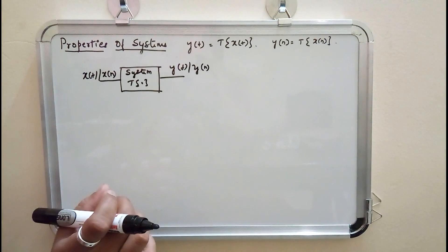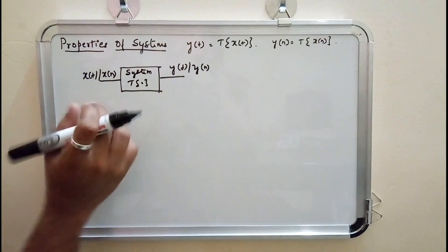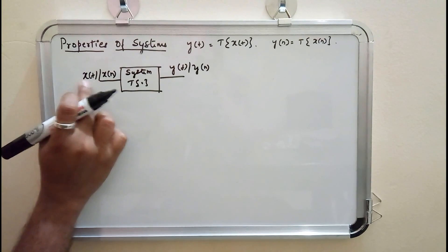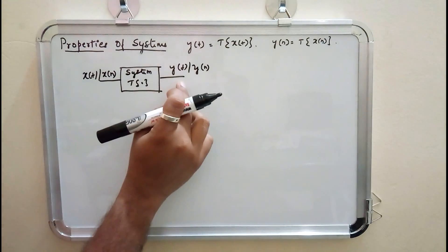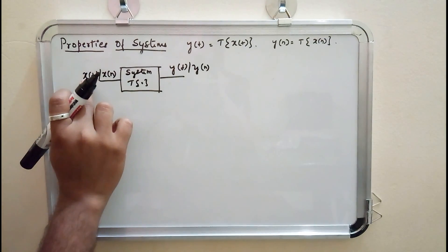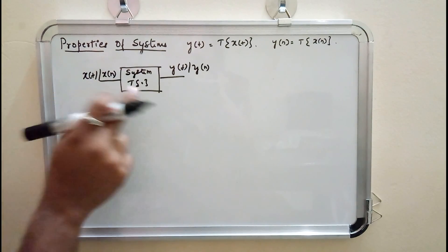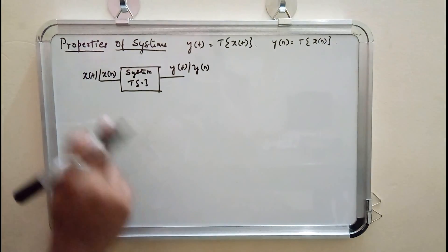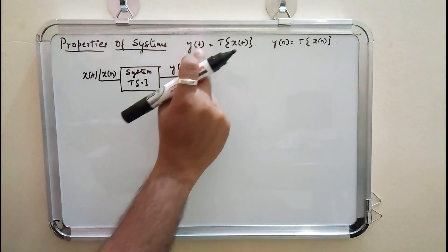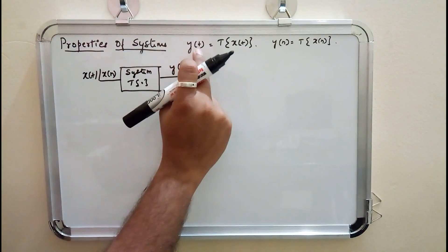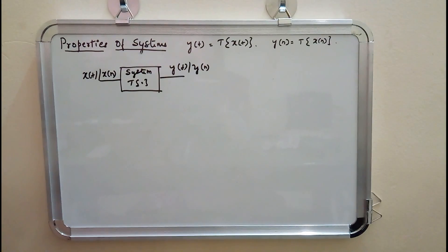A system as a whole can be represented like this. You have a system with inputs — it may be continuous time or discrete time — and some transformation takes place on the input. You get Y of T corresponding to X of T, and Y of N corresponding to X of N. That is, Y of T equals transformation on X of T, and Y of N equals transformation on X of N.